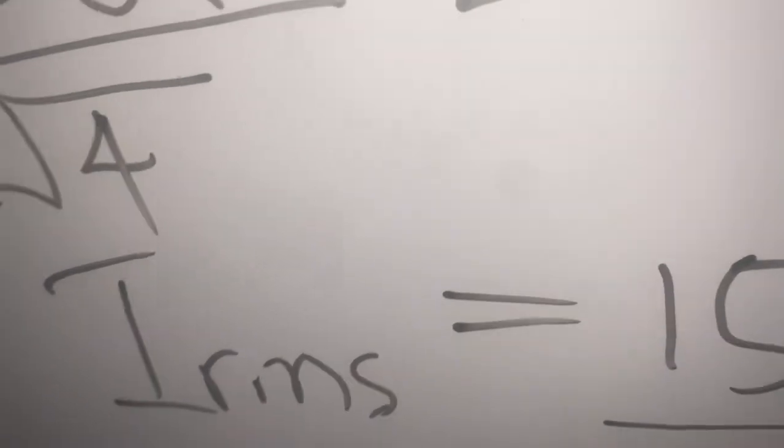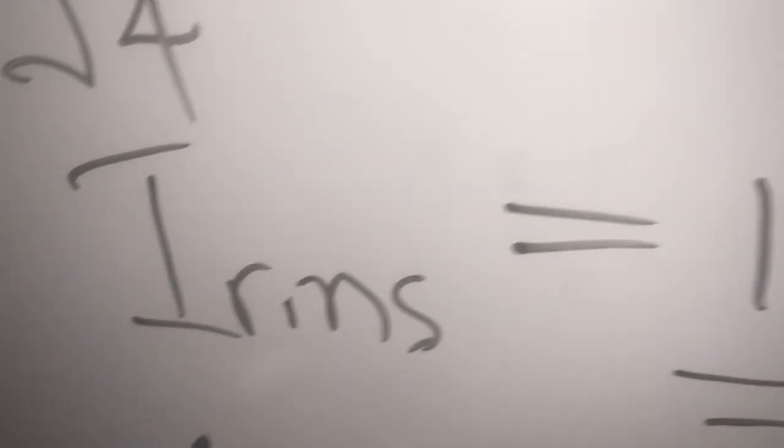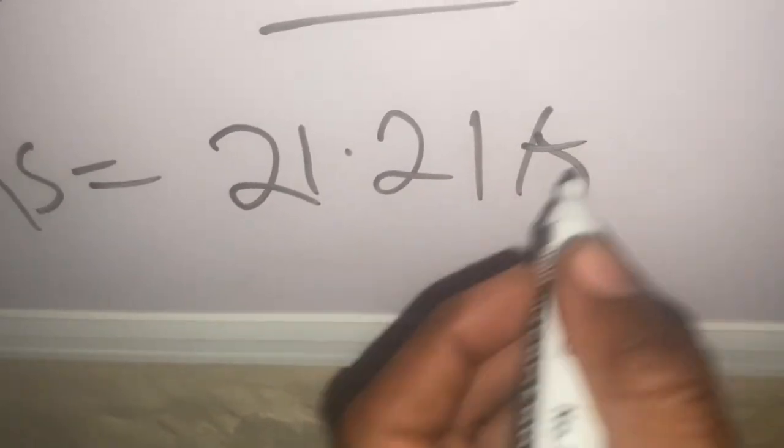Remember that amperes is the unit of current. We can also express this numerically: I_rms equals 21.21 amperes. And this is the final answer.